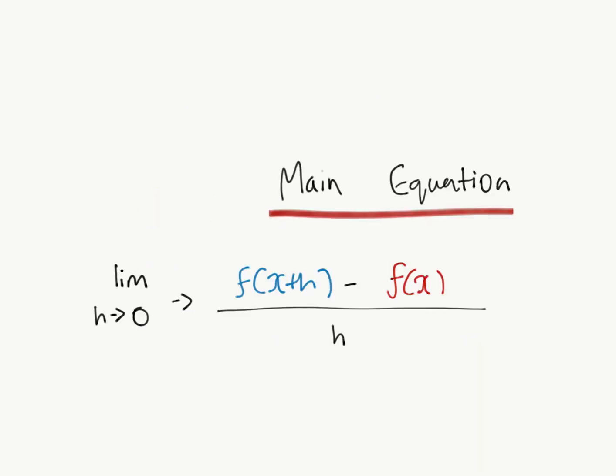So this is our main equation, and it's also known as the difference quotient equation. Finding the limit when h approaches 0 gives us the derivative of the function.